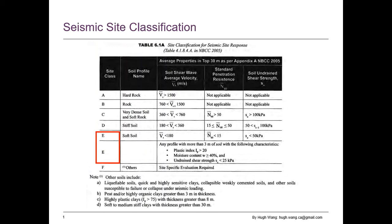In our geotechnical report we normally have a section for seismic site classification. Structural engineers use this to get the site coefficient for determination of the seismic loads. In this video I will discuss this topic. This is on page 91 from the Canadian Foundation Engineering Manual — look at table 6.1a, site classification for seismic site response.